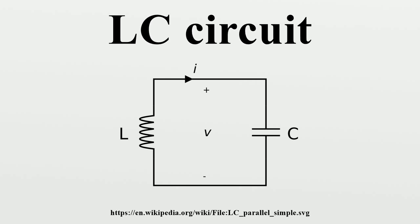Below the resonant frequency the circuit is capacitive; above it the circuit is inductive. Resonance in the series configuration occurs when the complex electrical impedance of the circuit approaches zero. The total impedance is given by the sum of the inductive and capacitive impedances. Writing the inductive impedance as ZL = jωL and capacitive impedance as ZC = -1/(jωC) and substituting, then writing under a common denominator and defining the natural angular frequency ω0, the impedance becomes zero at resonance and otherwise non-zero. Therefore, the series LC circuit, when connected in series with a load, will act as a band-pass filter having zero impedance at the resonant frequency of the LC circuit.